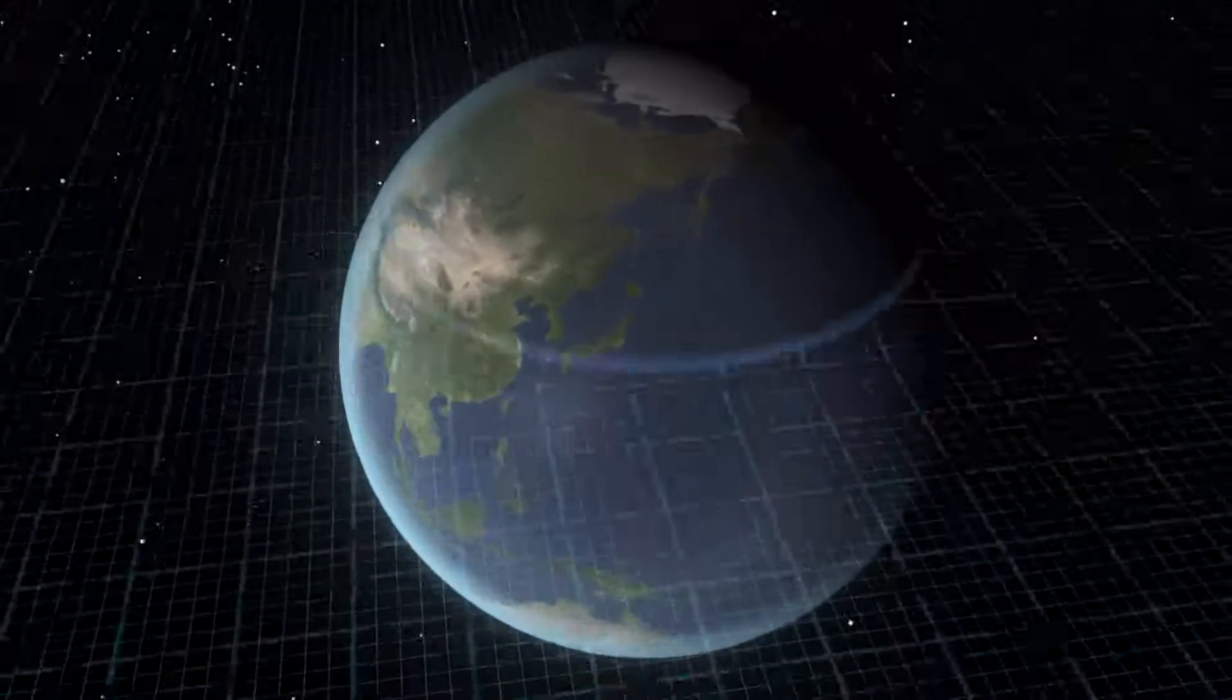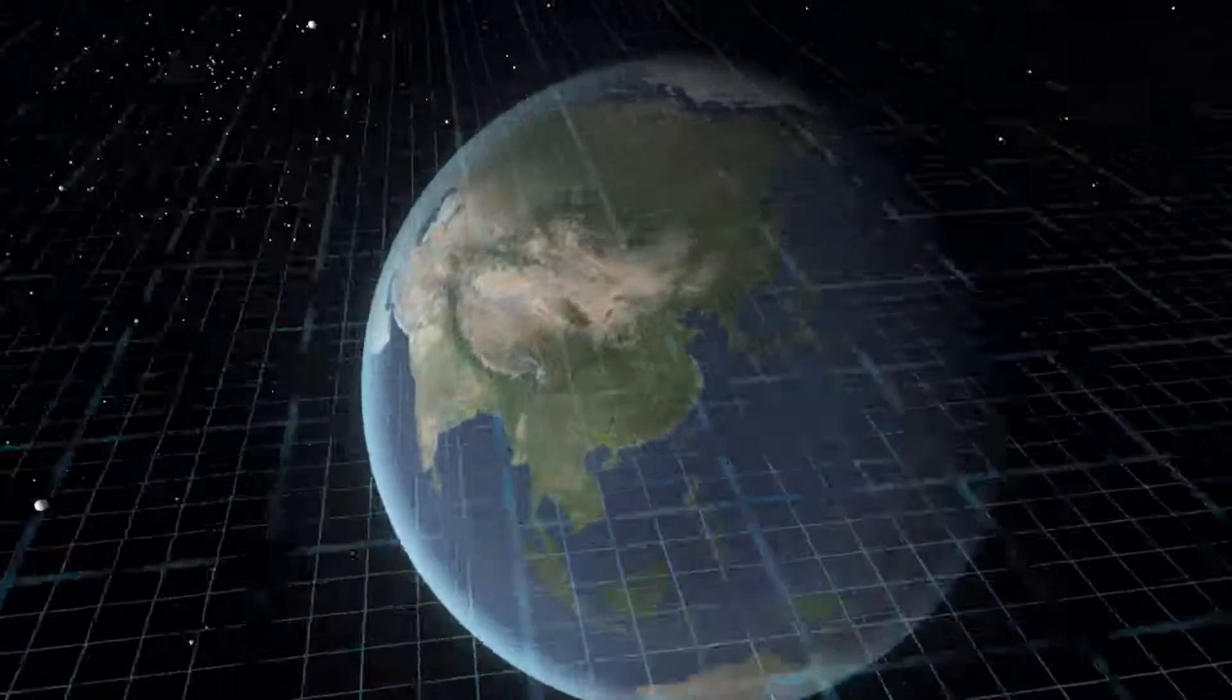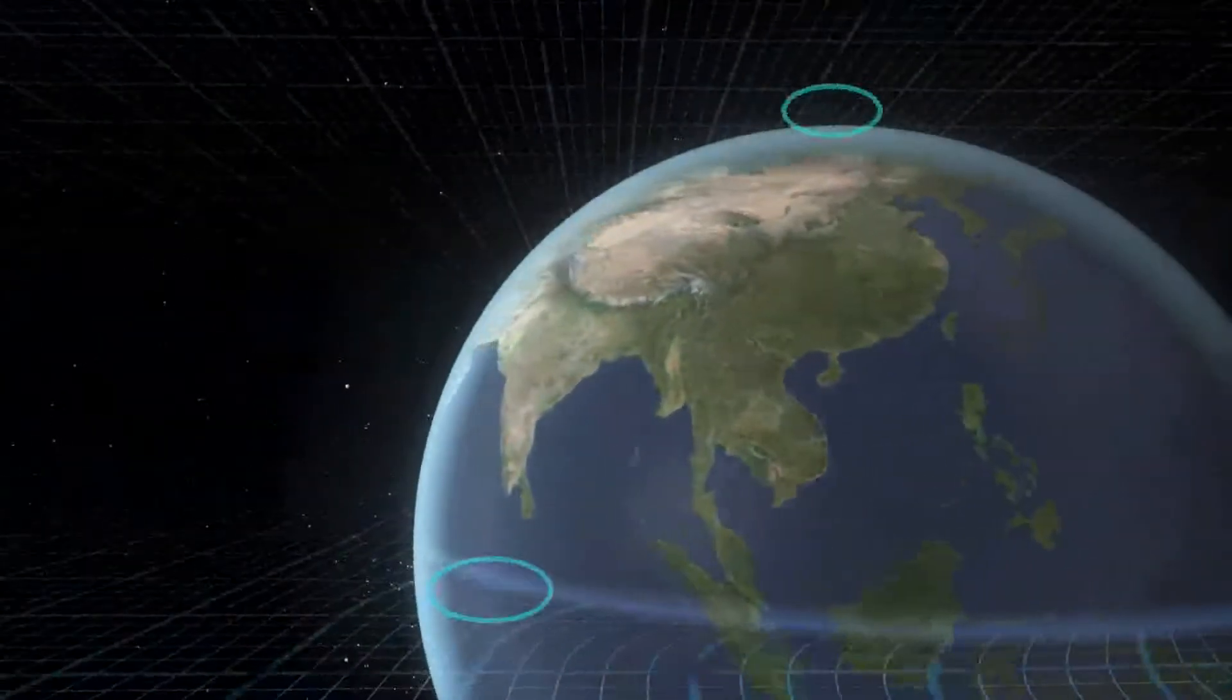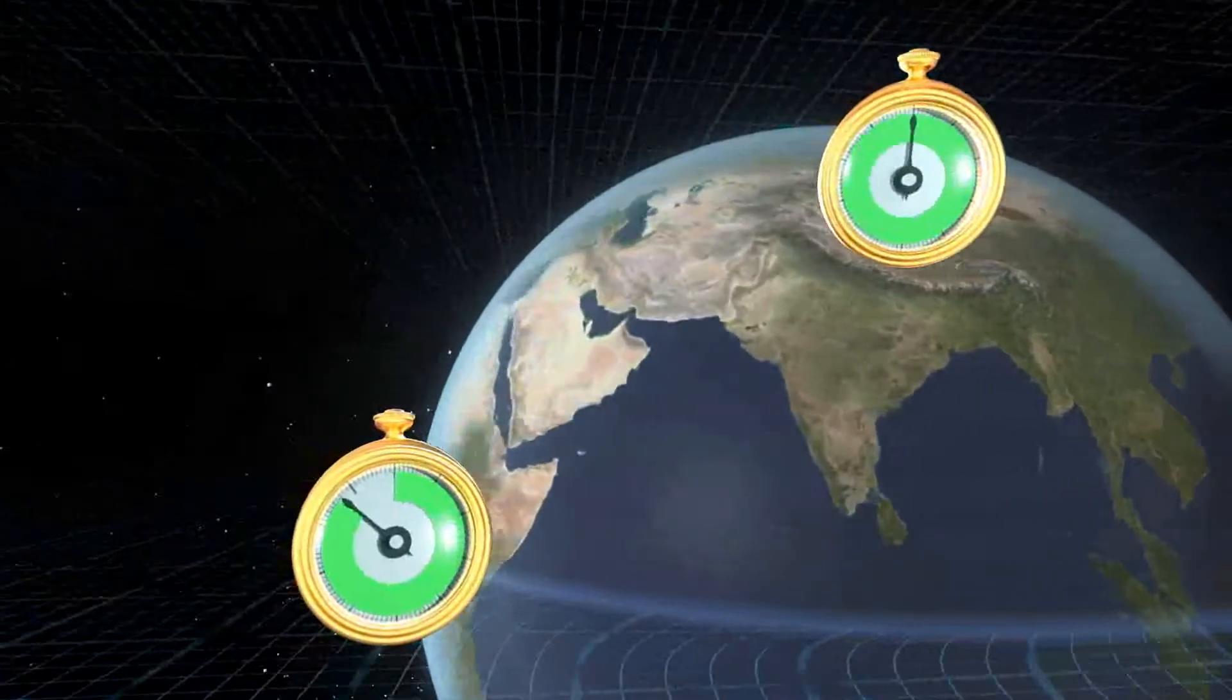At the equator, the surface of the Earth is moving faster than the surface at the poles. The faster motion deflects space more than at other, slower latitudes. This results in a clock at the equator running slightly slower than a clock at the pole.